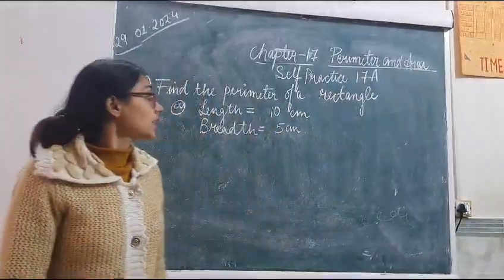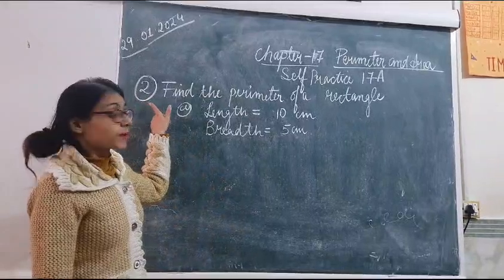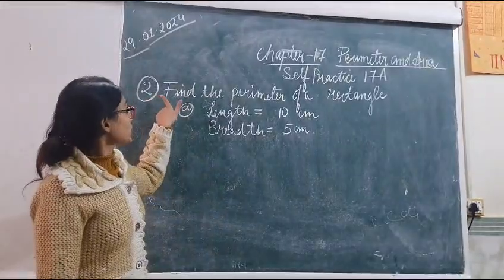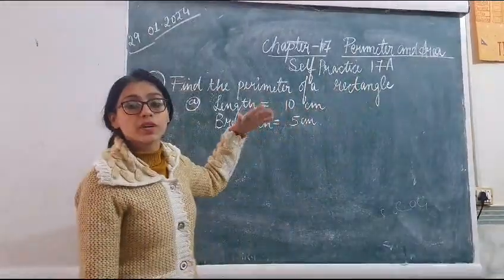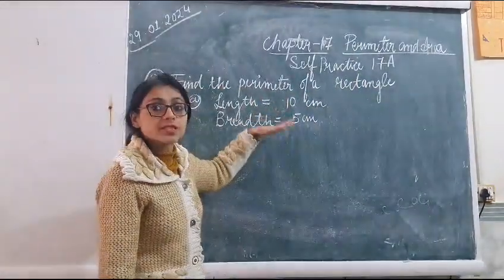We have done question number 1 in the notebook. Now I will explain question number 2. Question number 2 is find the perimeter of a rectangle. How to find the perimeter of a rectangle if length and breadth is given?